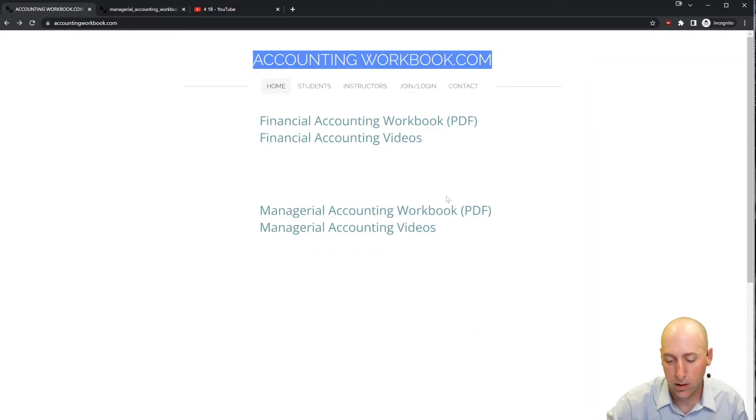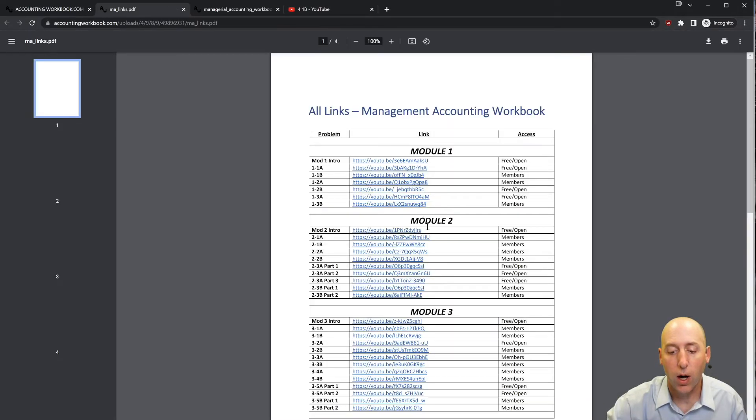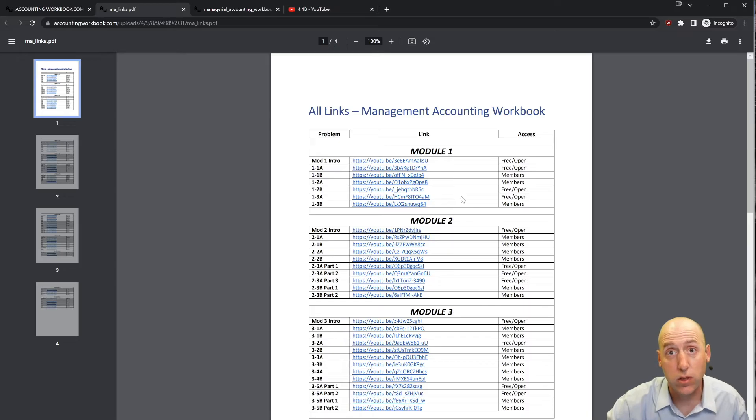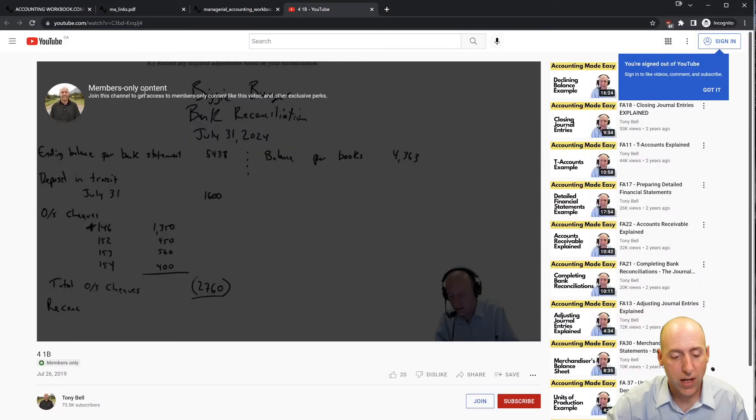Also found on the website are links to all of my accounting videos, not just the ones here on YouTube that are publicly listed, but also members-only videos. About 40% of my videos are free and open, the other 60% are for members. If you click one of the members links, it'll take you to a page that says members-only content. If you'd like access to that content, just hit the join button.